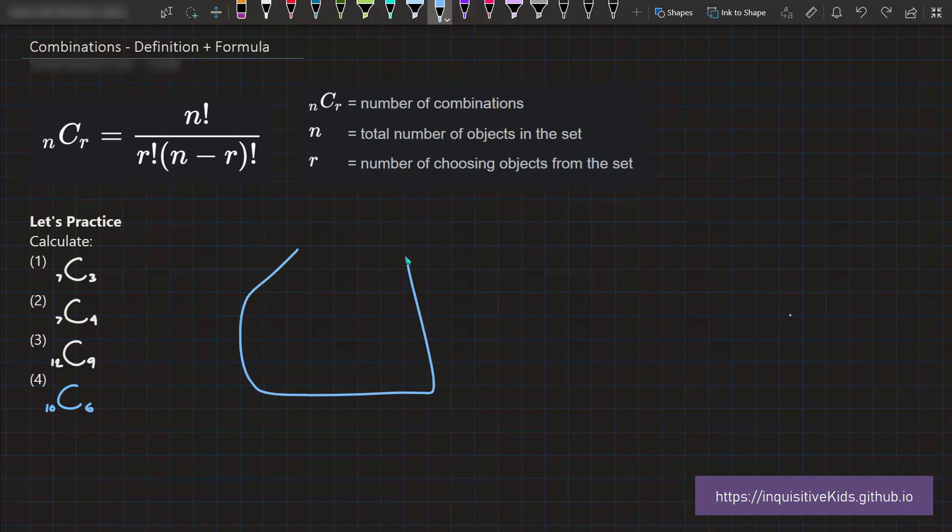Say we have a jar, and in the jar we have different colored gumballs. Two green ones, three red ones, and then two more blue ones. Now, the problem is asking you, in how many different ways can you select two gumballs from this jar?